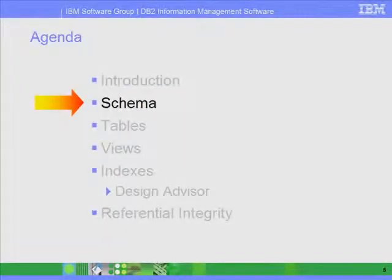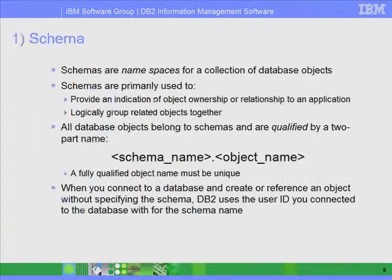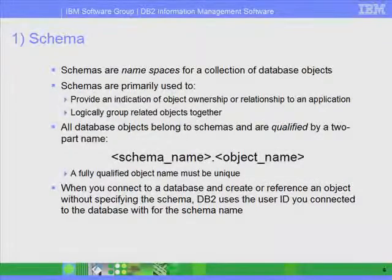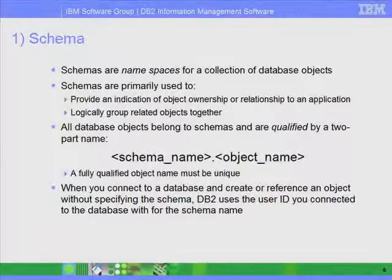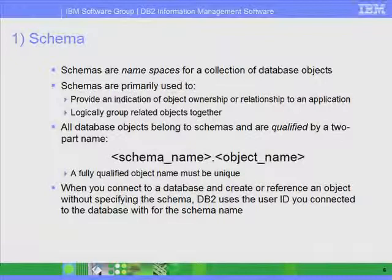So let's start with the schema. Schema is a concept that in other databases may mean something else. Normally when we talk about a schema in relational databases, we think of the entire system structure of the entire database, but schema in DB2 normally refers to the prefix of an object.